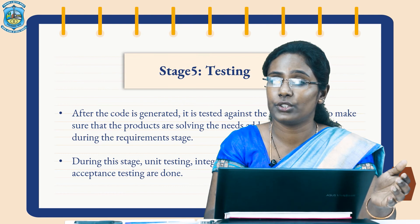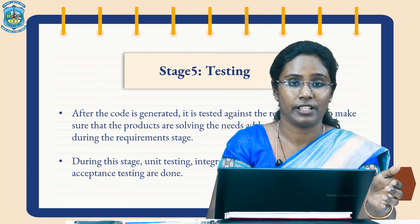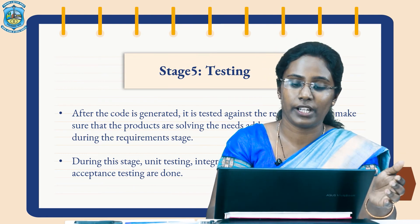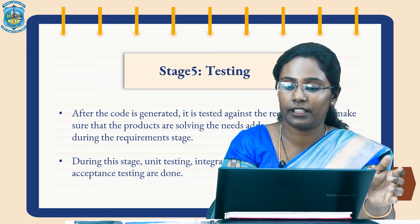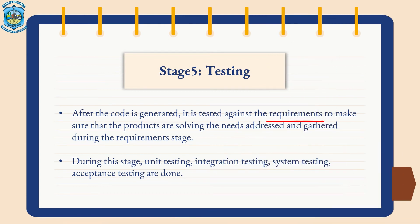The next stage is testing of the product. After the code is generated, it is tested against the requirements to make sure that the products are solving the needs addressed and gathered during the requirement stage. This stage includes different types of testing like unit testing, integration testing, system testing, acceptance testing, and so on.